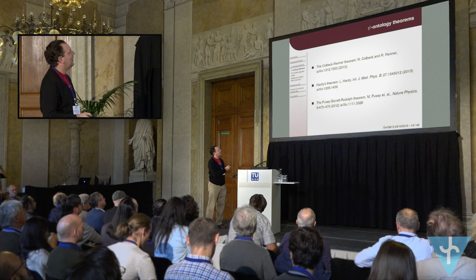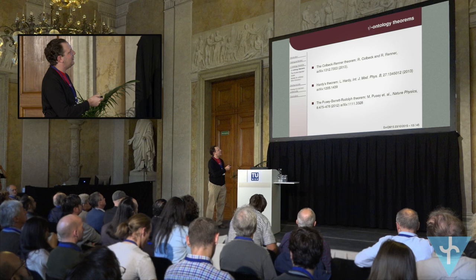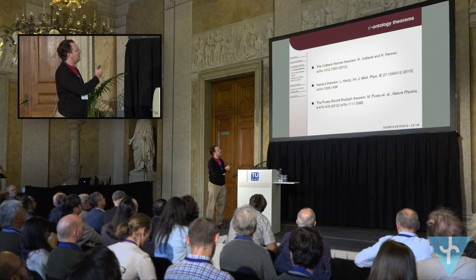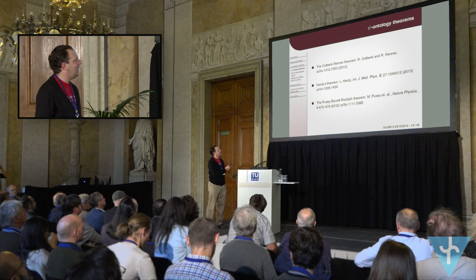In the literature since about 2011, you'll find various theorems which aim to conclude that an ontological model must be sci-ontic — the Pusey-Barrett-Rudolph theorem is the most famous, but there are others. The only point I want to make here is that in addition to the bare framework, each of these theorems makes some additional assumptions — for example, about how subsystems are supposed to compose in the theory — and those assumptions have been criticized. We would in principle like to find out what happens if you don't have to make any additional assumptions.